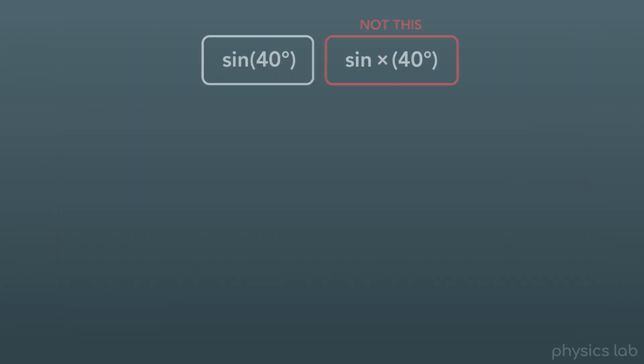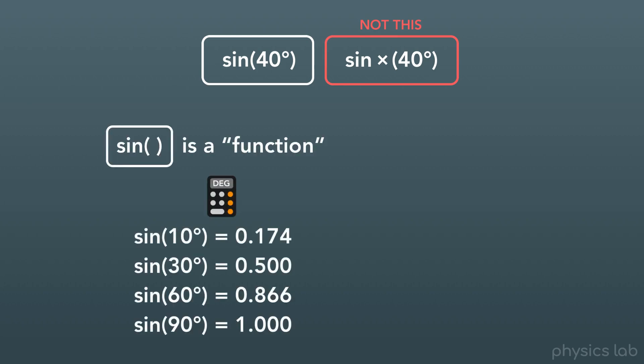But that is not what we're doing here. We're not multiplying something called sine times 40 degrees. Sine is what we call a function. That means you can use a calculator to plug in any number you want into that sine function, and it'll give you a different number, just like you see here.